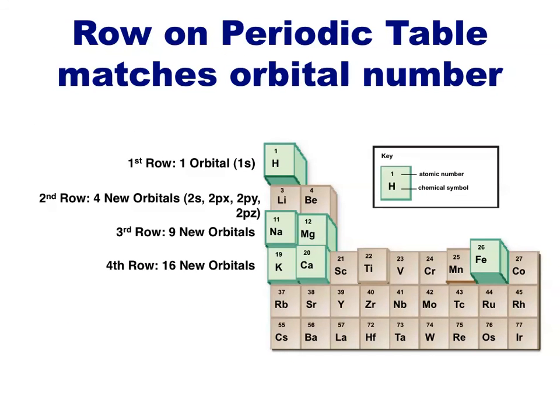Each row of the periodic table has elements with the same outer energy level. The first row contains elements that have only one orbital in a single energy level. The second row has four new orbitals found in the second energy level.